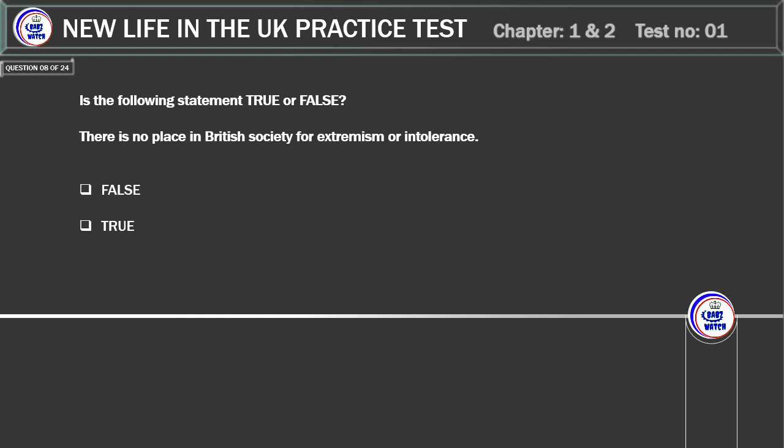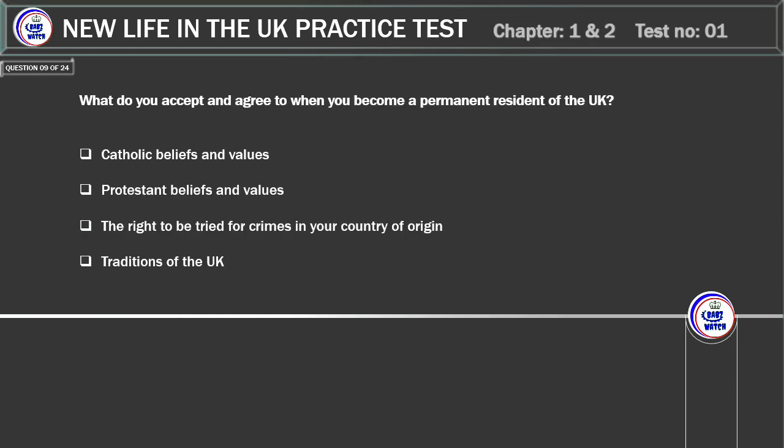Is the following statement true or false? There is no place in British society for extremism or intolerance. Correct answer: True. Explanation: there is no place in British society for extremism or intolerance.